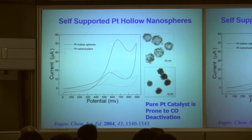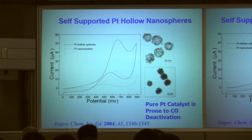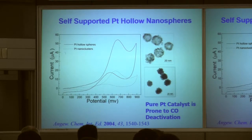Here is a cyclic voltammogram. From this cyclic voltammogram, you can see this curve is from the hollow nanosphere and here is the solid nanoparticle. The oxidation current is much higher than for the solid nanoparticle. That means, in this case, the hollow nanosphere has a larger surface area, resulting in a very high oxidation current.